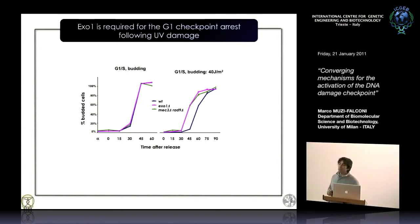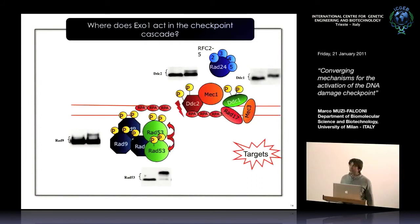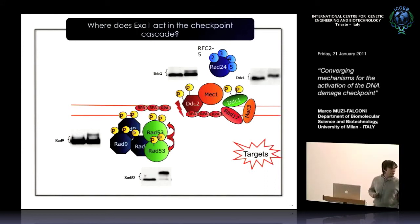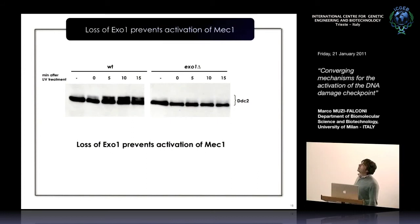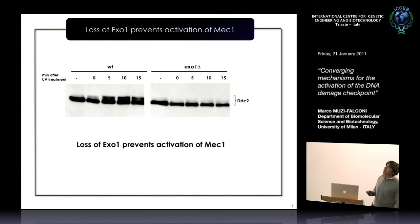The next question was: what is XO1 doing, and where in the checkpoint cascade does it act? We can answer this by looking at the phosphorylation status of all factors. If you take out XO1, you cannot see the first phosphorylation event we can detect — the phosphorylation by MEK1 of its DNA-binding partner DDC2. In wild-type cells after UV radiation, DDC2 gets phosphorylated. There is no phosphorylation of DDC2 in the XO1 mutant. This tells us that XO1 activity is required to actually activate the first kinase in the cascade.